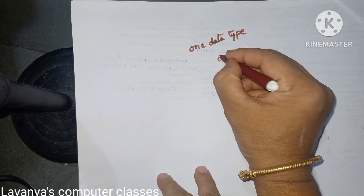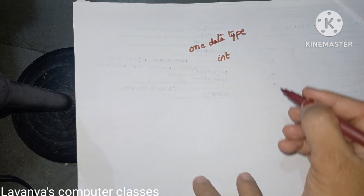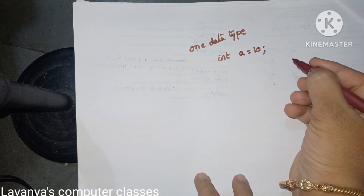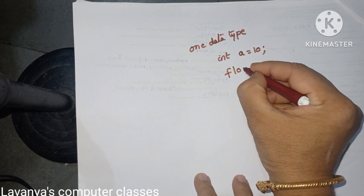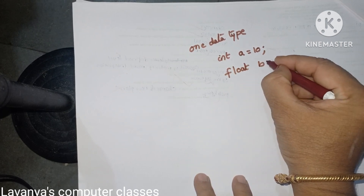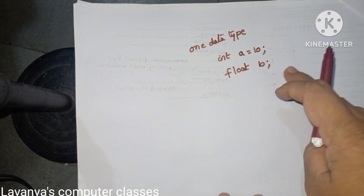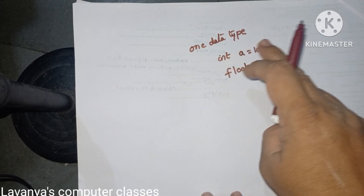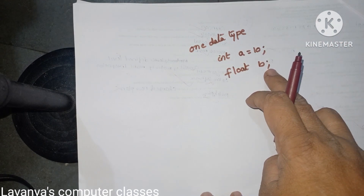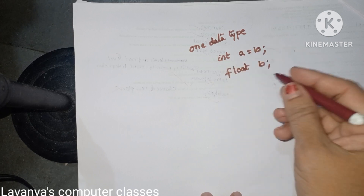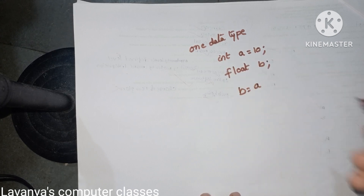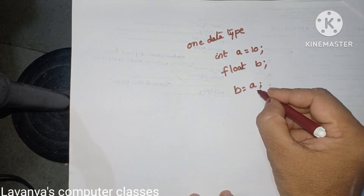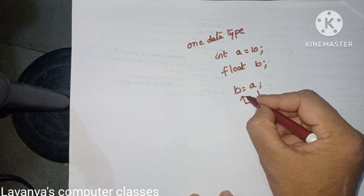For example, different data types are available in C language. One is integer — we declare a variable like int a = 10. Then float — float b is one more data type. So there are two variables: variable a is integer data type with value 10, and variable b is float data type. After that, using the assignment operator, b = a, meaning the value of variable a is assigned into variable b.